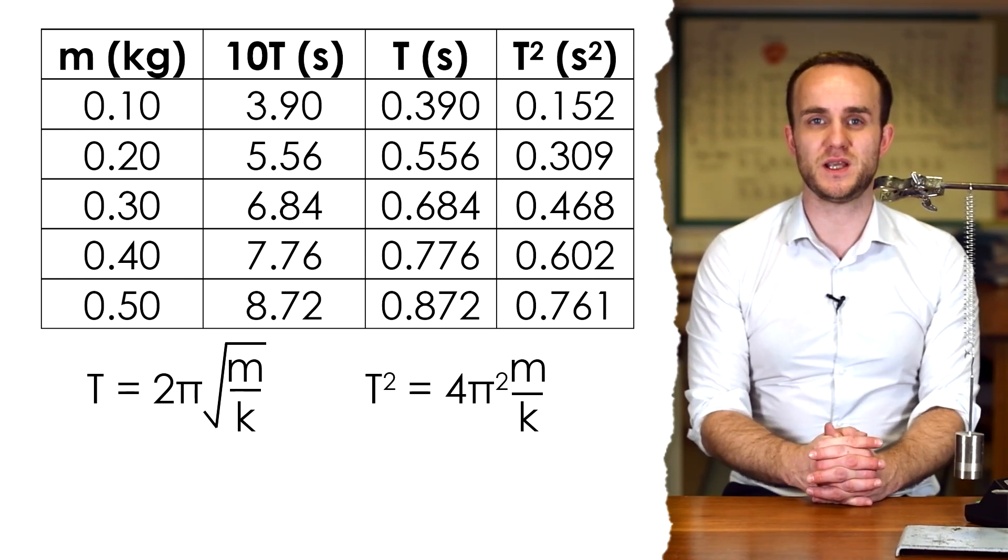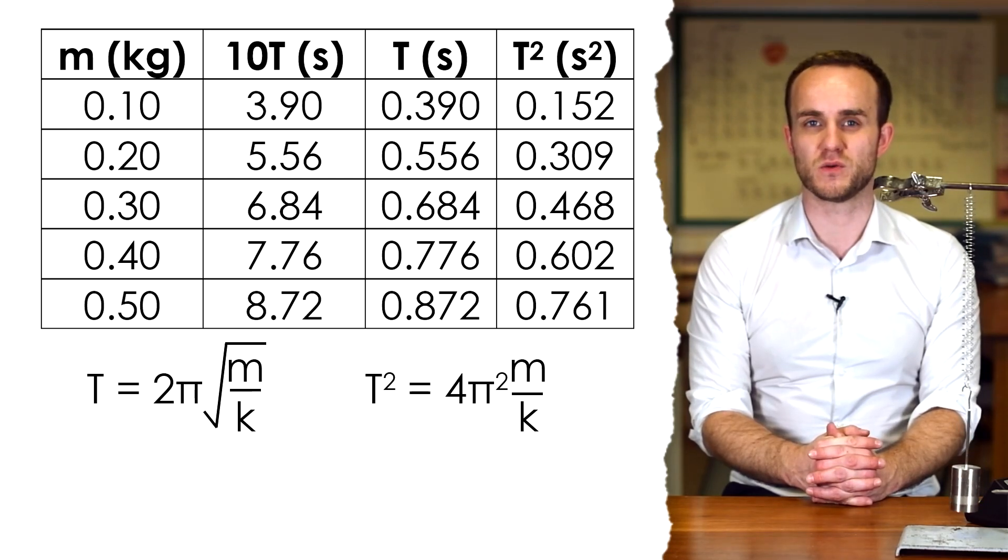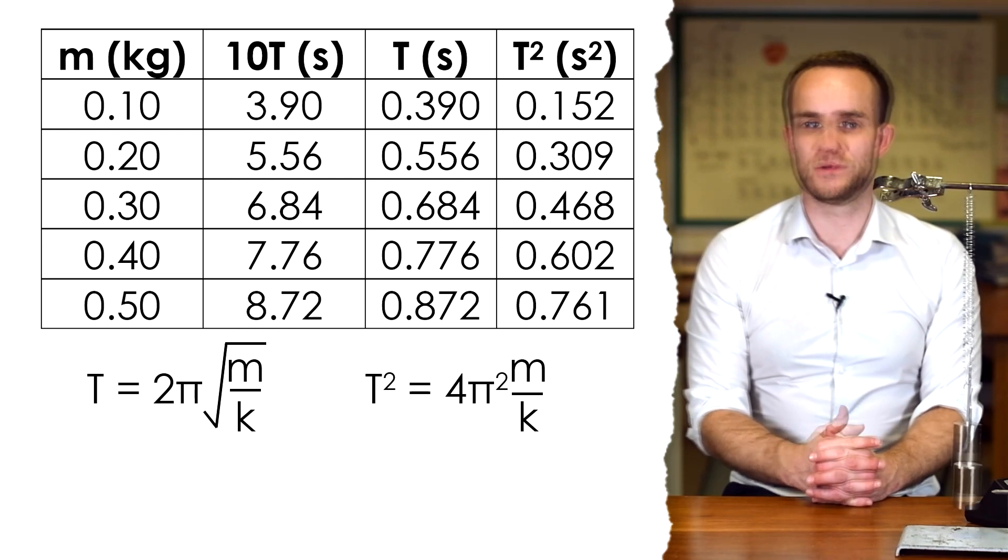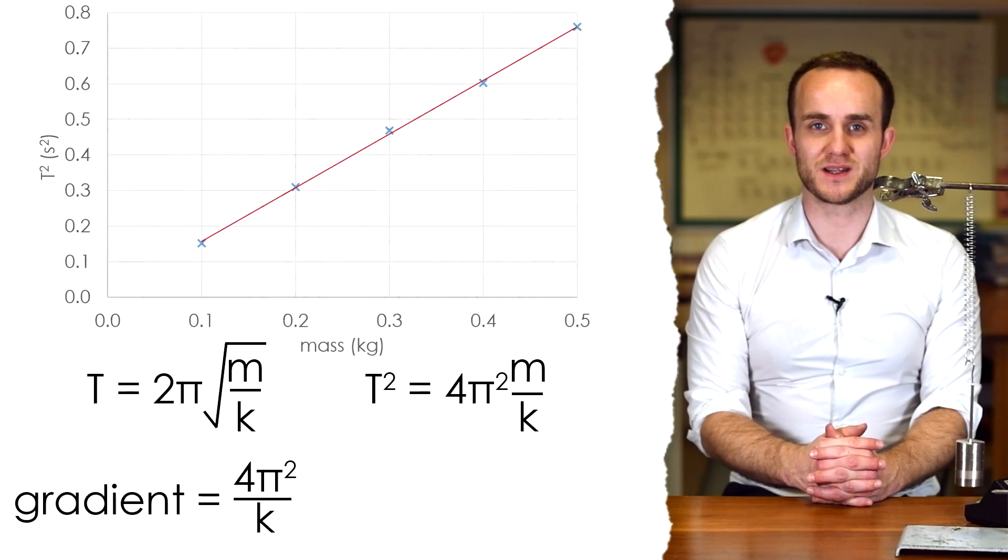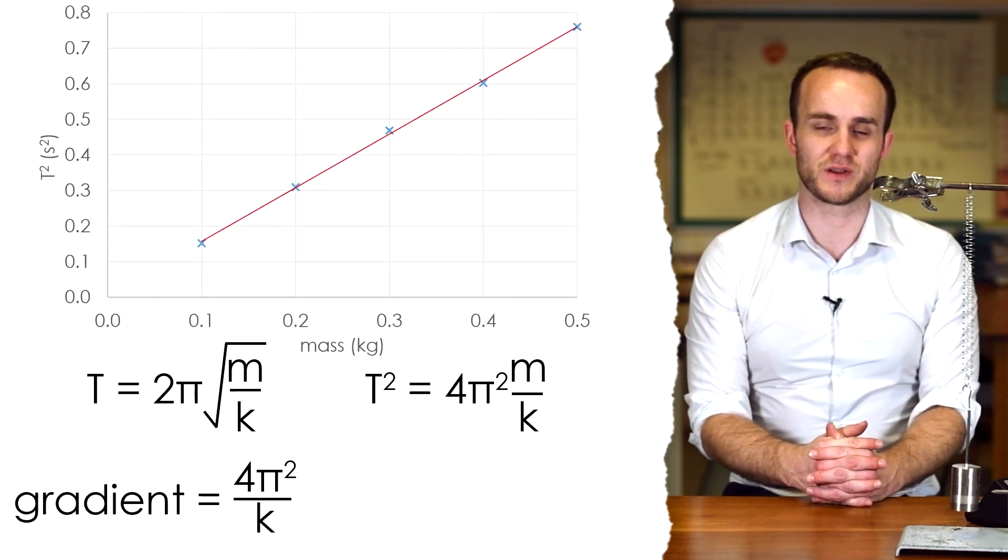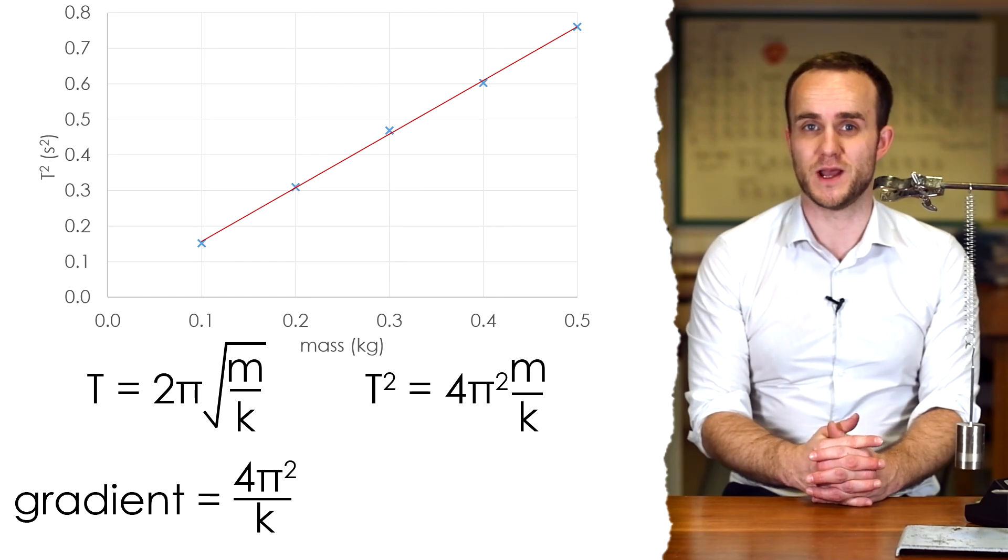Squaring the whole thing, t² = 4π²m/k. So if I do a graph of t² against m, I should end up with a straight line graph that goes to the origin because t² should be proportional to m.